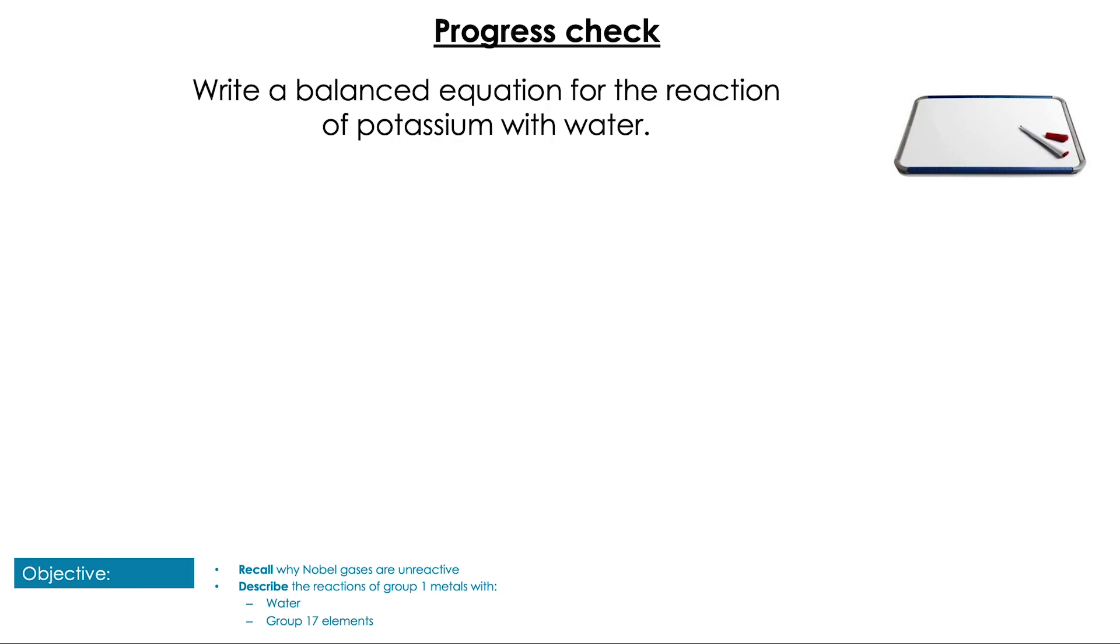Have a go at writing a balanced equation for the reaction of potassium with water. Remember, with alkali metals reacting with water you're always going to form the metal hydroxide and hydrogen gas, and don't forget to balance your equation at the end.